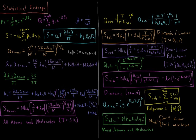For polyatomic molecules, there are three rotational temperatures corresponding to the three Cartesian dimensions, and the rotational entropy is Nk times (3/2 + 1/2 · ln(π T³ / θ_A θ_B θ_C / σ)). This result applies to nonlinear polyatomics when the temperature is much greater than each of the rotational temperatures.